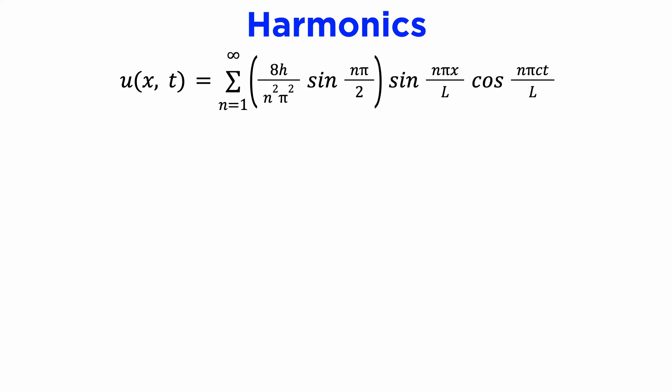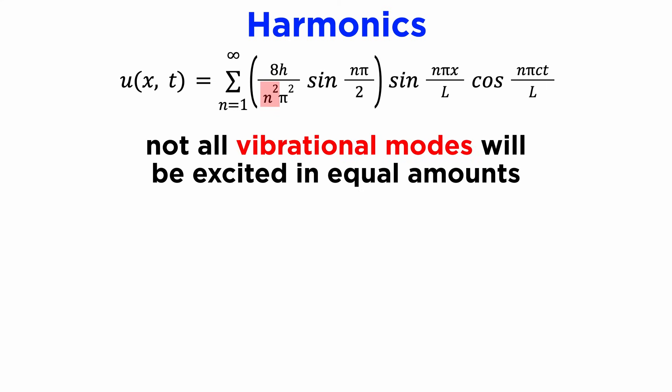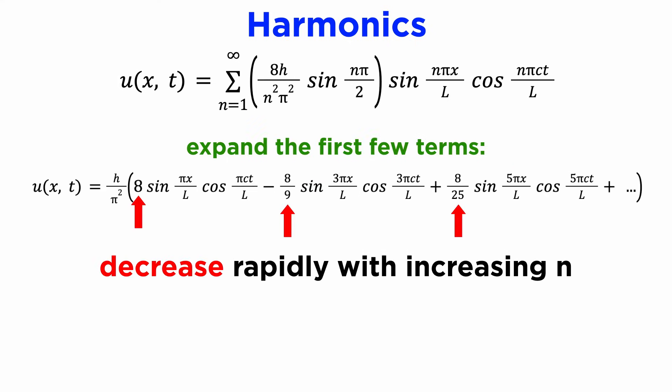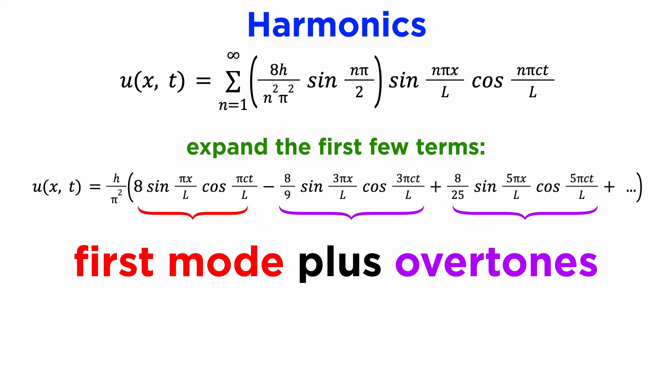But if we observe that the factor at the front has the form 1 over n squared, we can see that not all of these vibrational modes will be excited in equal amounts, and indeed the higher frequency components will have much smaller amplitudes. This means that the guitar string will primarily produce the fundamental frequency by vibrating at the first mode, but it will also have some harmonics at higher frequencies, known as overtones, to complement the sound it produces, starting at three times the fundamental frequency for our initial condition.